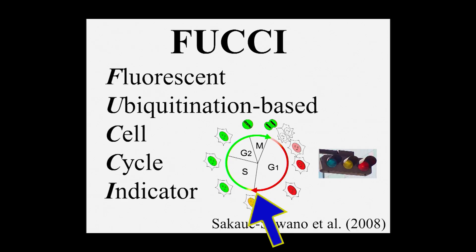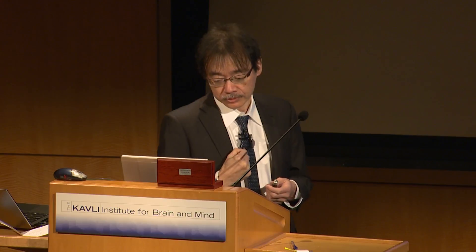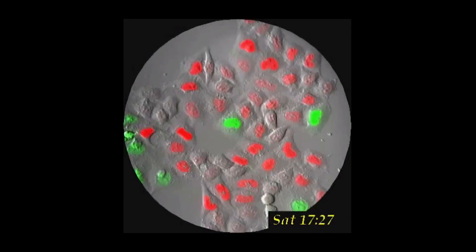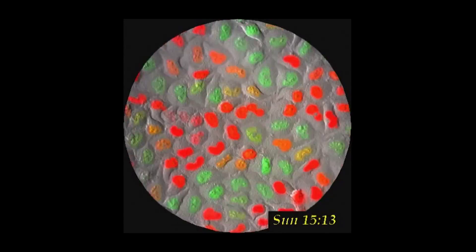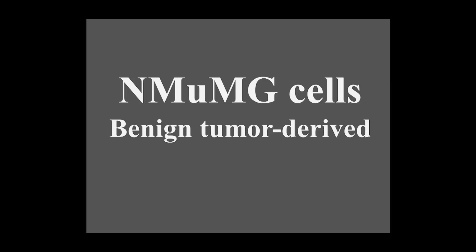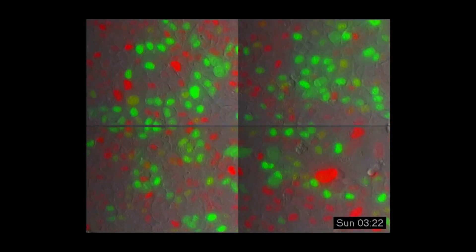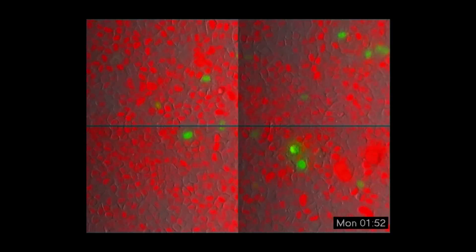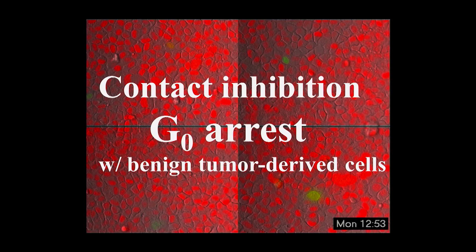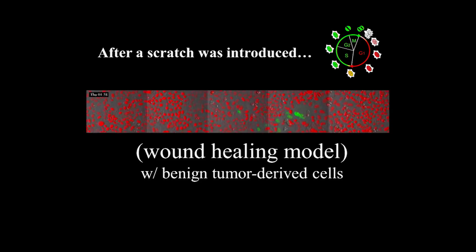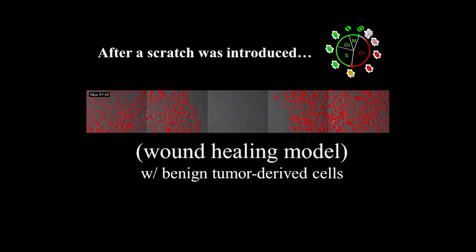The green and red indicate S-phase entry — like a traffic signal for go and stop. When FUCCI was introduced into HeLa cells derived from malignant tumor, we observed cell cycle progression in real time at a single cell level. But when we did the same thing using a benign tumor-derived cell line, we saw very clear contact inhibition. Upon reaching confluency of the monolayer, all of the cells became red and stopped their proliferation. When we introduced a scratch, some of the cells turned green after a latent time — they re-entered the cell cycle to fill the gap.